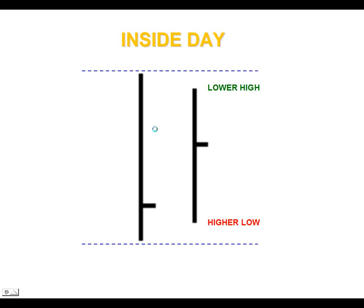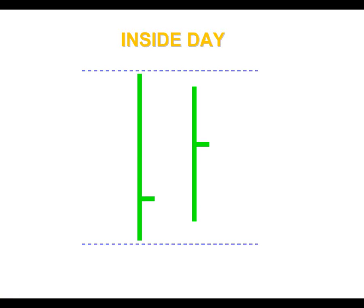For the buy pattern, we want both bars of an inside day pattern to be colored green — this is your signal that a quick upward momentum movement may continue. The PET-D is telling us we're most likely going higher. For the sell pattern, we want both bars to be colored red, signaling a quick downward momentum movement may continue. Let's look at some stocks and ETFs to show how powerful combining trend with this consolidation pattern works.